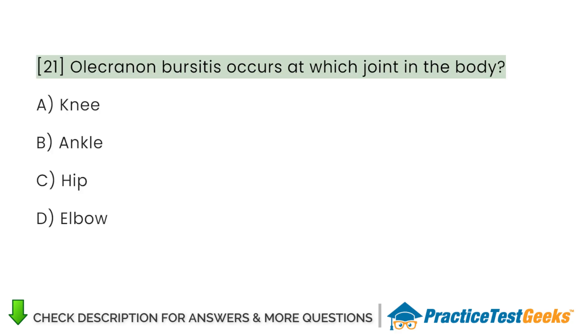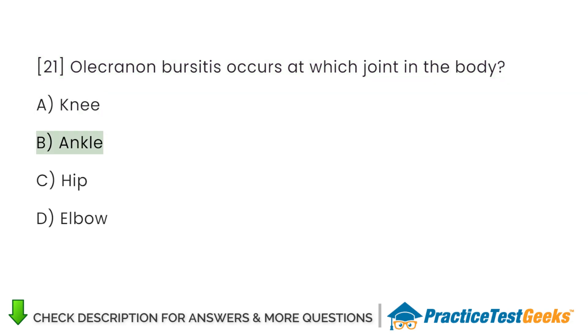Olecranon bursitis occurs at which joint in the body? A. Knee. B. Ankle. C. Hip. D. Elbow.